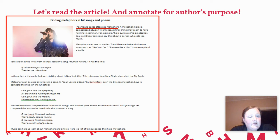Writers have often compared love to beautiful things. The Scottish poet Robert Burns did this about 300 years ago. He compared the woman he loved to both a rose and a song. Oh, my love is like a red, red rose that's newly sprung in June. Oh, my love is like the melody that's sweetly played in tune.